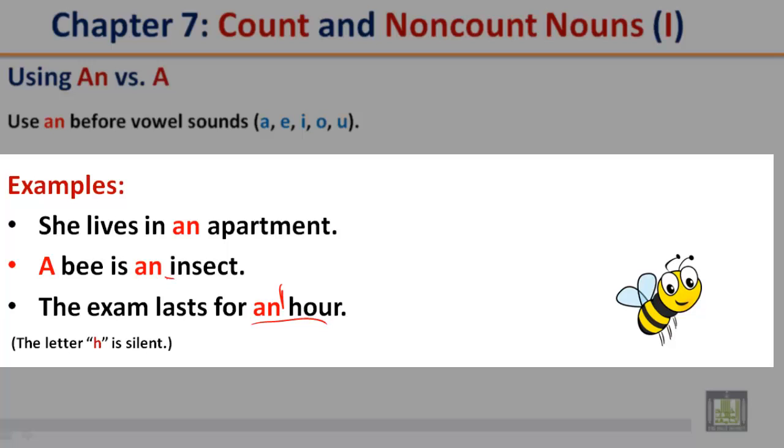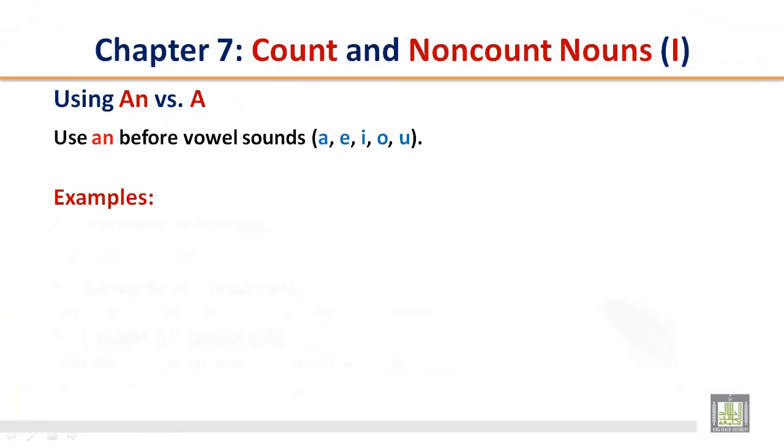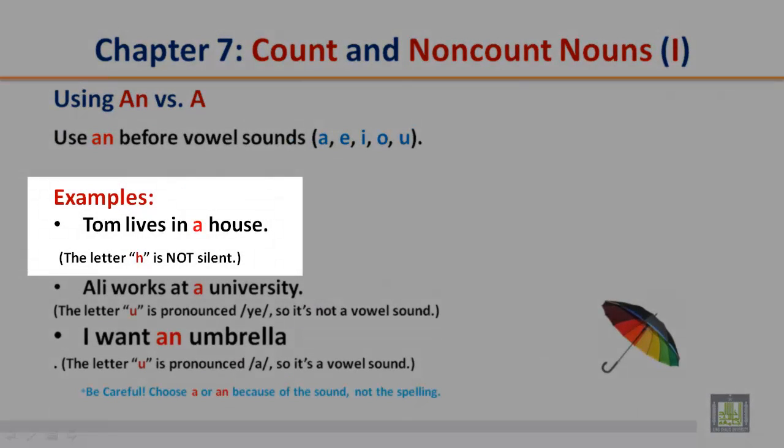Now, H. The exam lasts for an hour. The H is not a vowel, it is a consonant. But since it is silent, the O is a vowel sound. So you use an.